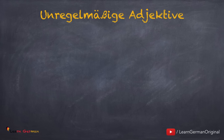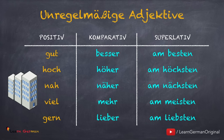There are also some irregular adjectives in German — Unregelmäßige Adjektive. Let's see how they form their Komparativ and Superlativ. Gut, besser, am besten. Hoch, höher, am höchsten. Nah, näher, am nächsten. Viel, mehr, am meisten. As you can see, these adjectives don't follow any rule, so you have to learn these by heart.